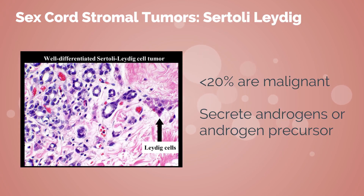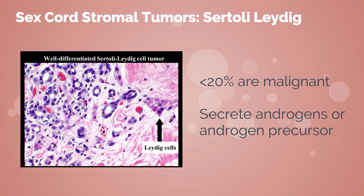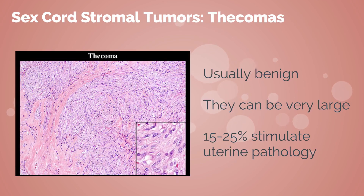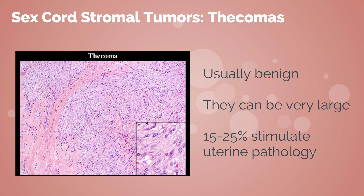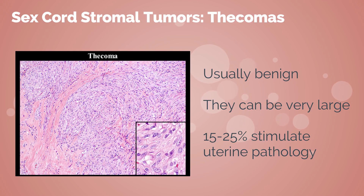Sertoli-Leydig cell tumors are less likely to be malignant, with less than 20% undergoing malignant transformation. These tumors often produce large quantities of androgens or androgen precursors. Thecomas are solid, generally benign tumors. They can become very large, which will often raise significant alarm. They have been known in 15–25% of cases to stimulate uterine and endometrial pathology, so patients need to be broadly assessed.